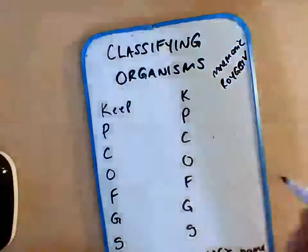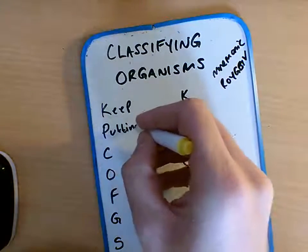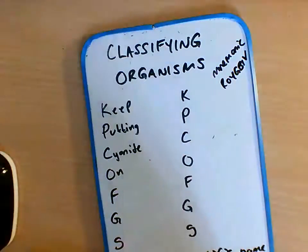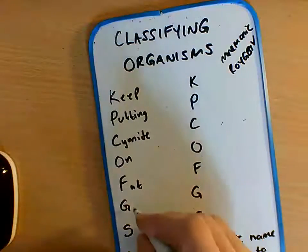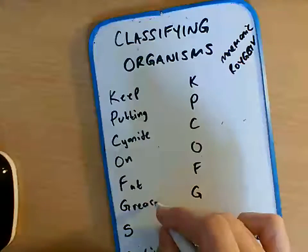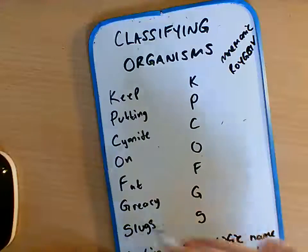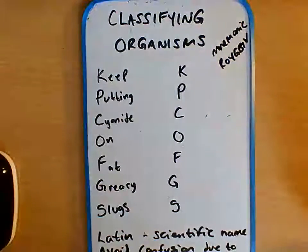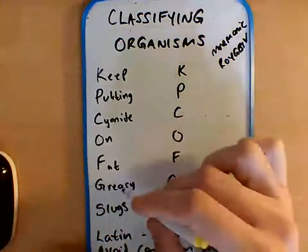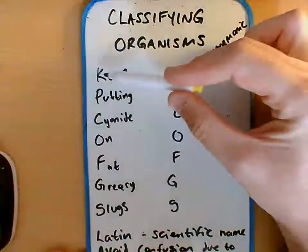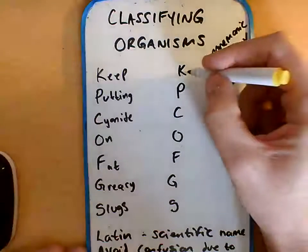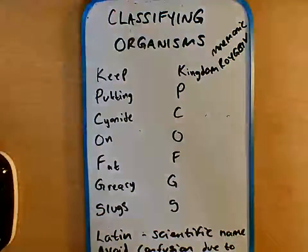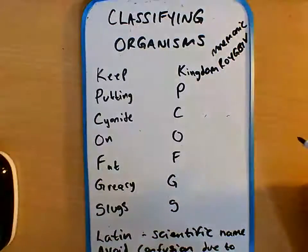For classification, we use: 'Keep putting cyanide on fat greasy slugs' — or alternatively 'keep putting cheese on fat greasy sausages'. You can create your own at home to help you remember. Each letter of that rhyme represents a key term. We start off with the highest, most important group, which is the kingdom — a massive group of organisms, for example the animal kingdom or the plant kingdom.